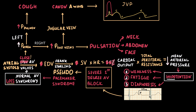Atrial systole occurring when AV valves are closed leads to atrial pressure elevation. This pressure conducts from the right atrium to the systemic veins, causing rapid increases in systemic venous pressure, represented as pulsation of the neck, face, and abdomen. High systemic venous pressure also means higher pressure in the jugular vein during atrial systole, causing cannon A waves in the jugular venous pressure curve. High left atrial pressure conducts to the pulmonary circulation and causes cough and rales in cases of fluid transudation into the lung tissue.